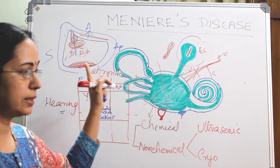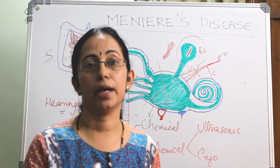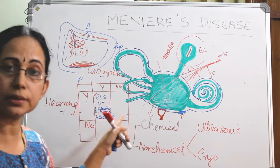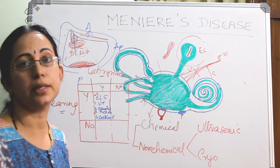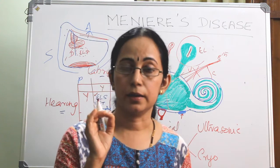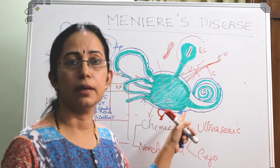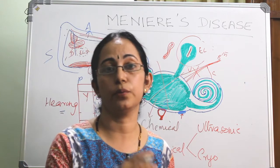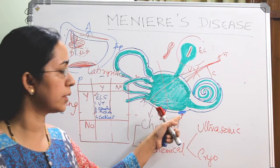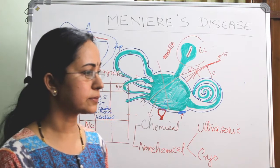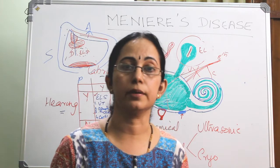Access via the lateral semicircular canal is the wet method. Second is access through all three semicircular canals — that is into the ampullated end, mainly to the ampullated end of the posterior semicircular canal. The third is a transcanal approach to the round window through the middle ear — we make a tympanomeatal flap and through the middle ear, place the transducer into the round window.